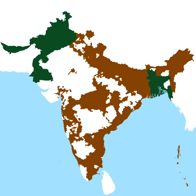The Prime Minister of the United Kingdom announced on 20 February 1947 that the British government would grant full self-government to British India by 30 June 1948 at the latest. The future of the princely states would be decided after the date of final transfer is decided.